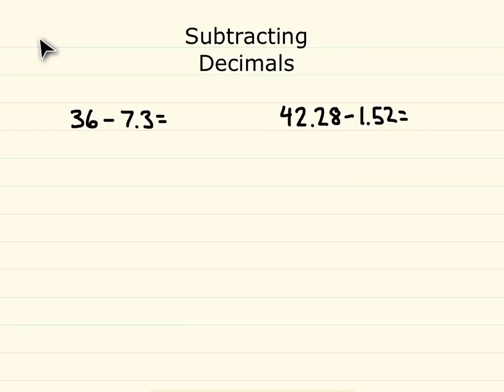First, let's use the same principles that we use when we add decimals. Here we have the problem 36 minus 7 and 3 tenths. First of all, think to yourself, what do you need to take the 7 away from? Do you need to take it away from the 6 or the 3? Well, since the 7 is in the ones place, you need to take the 7 ones away from the 6 ones.